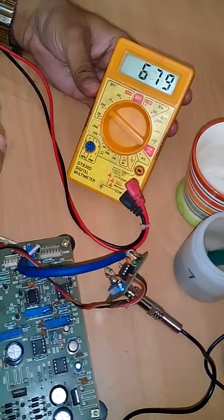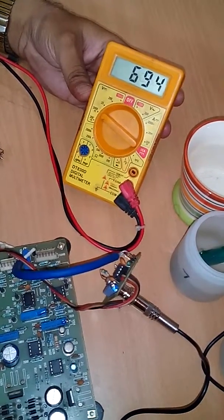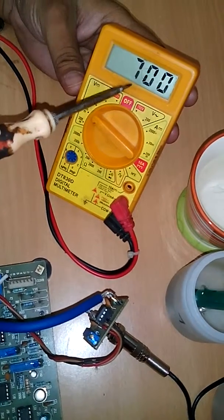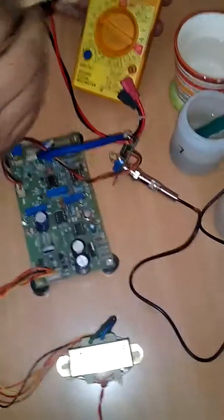By turning this trim port we can adjust the output and bring it to 7. It is now showing 7 pH. We have calibrated this circuit to 7 pH.